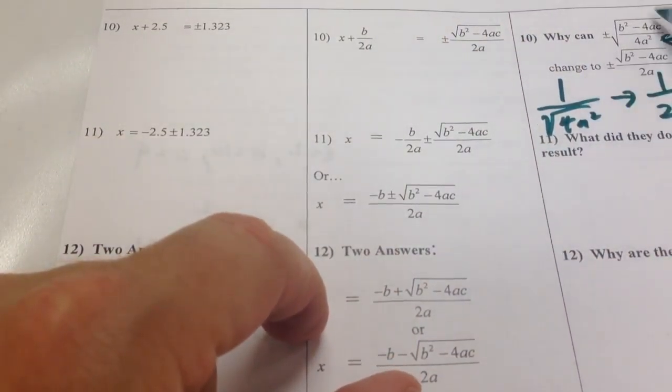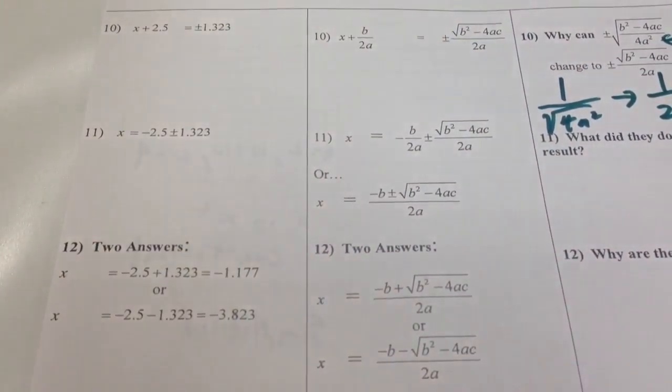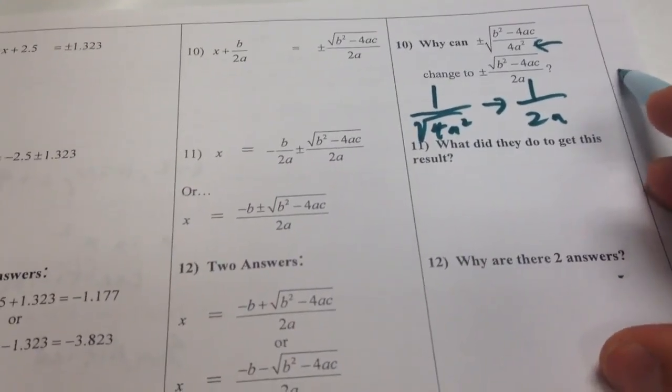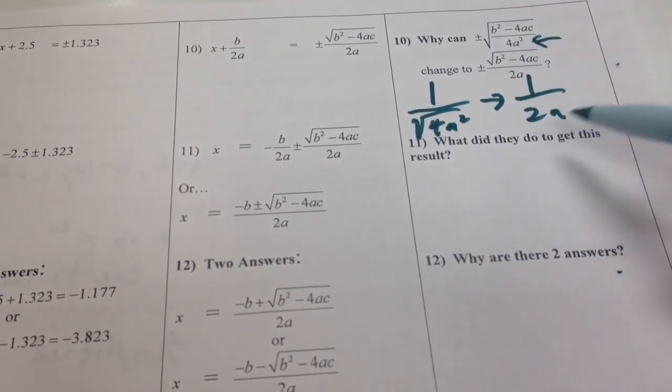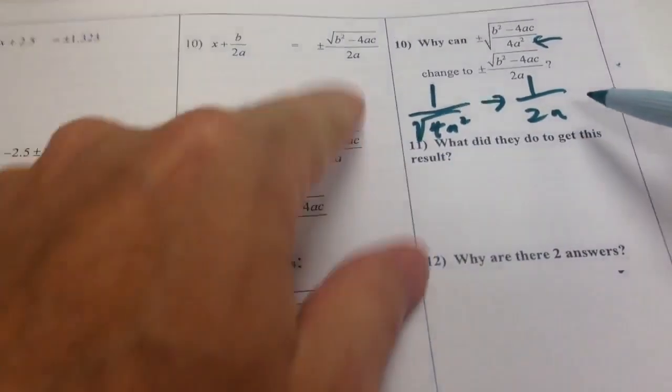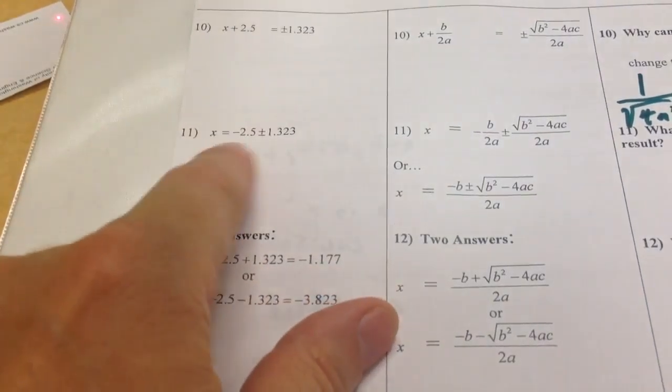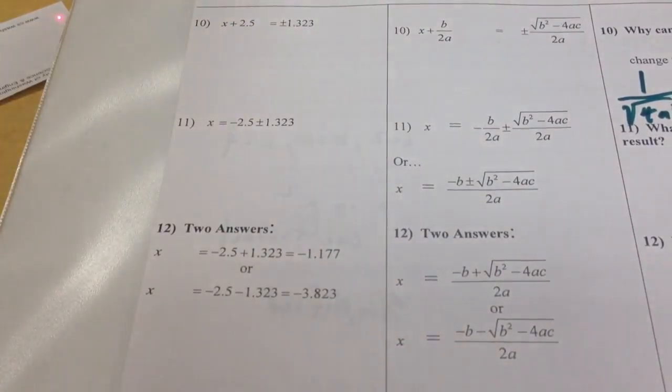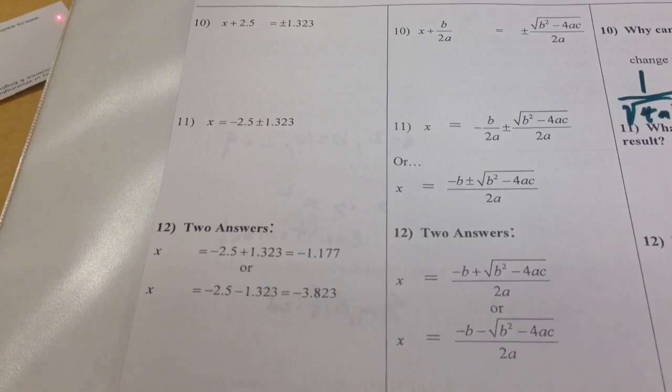And the reason we can do that is because 1 over the square root of 4a² is 1/2a. Those are equivalent with whatever we had on top before. In this case, we had this. I'm saying it would be the same if we had 1. So that's what we did there. Just simplified that a little bit.